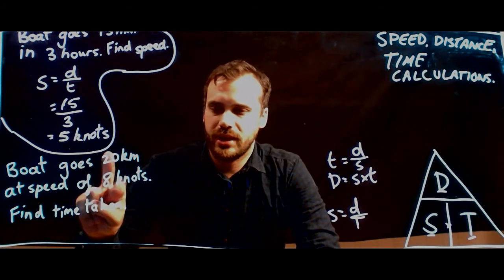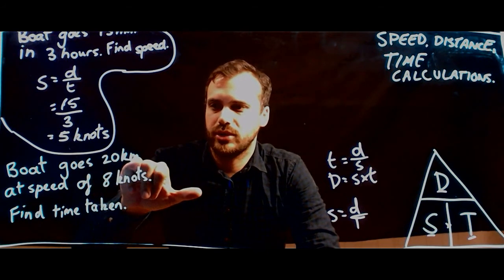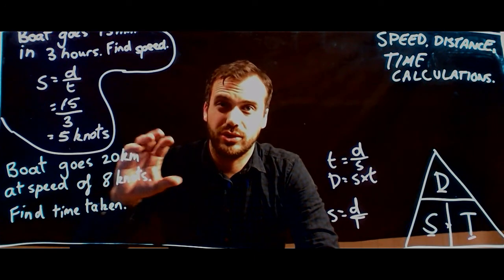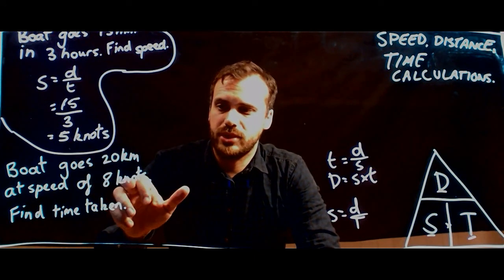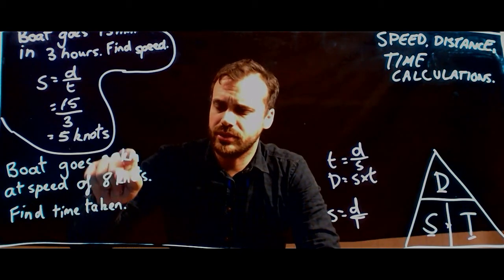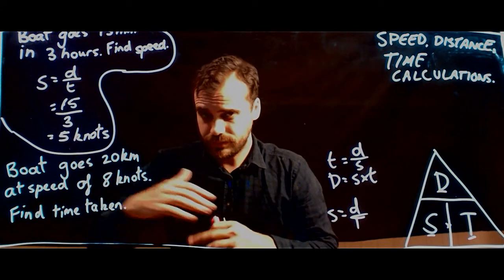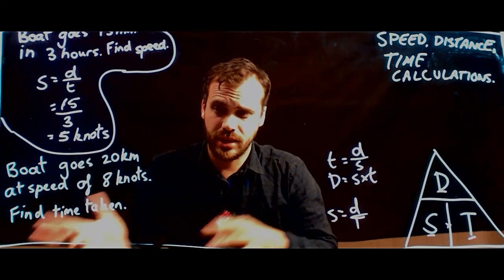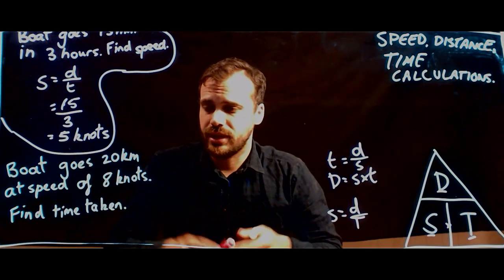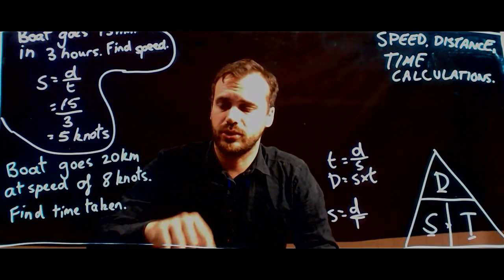Now, we're going to have to do a conversion here. So we're going to have to take that 20 kilometers and first convert it to nautical miles. Because remember, knots is nautical miles per hour. We can't work with these things, because they're in different units. One's kilometers, like a normal person, and one's knots, like a sailor. So first of all, we need to make a conversion from kilometers to nautical miles.